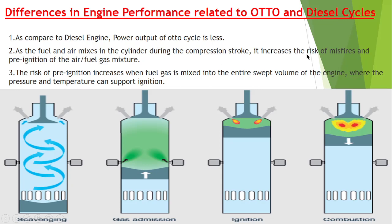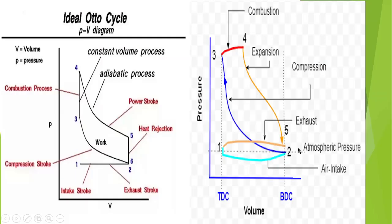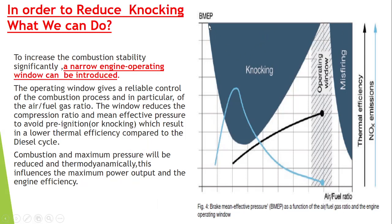As the fuel and air mix in the cylinder during the compression stroke, it increases the risk of misfire and pre-ignition of the air-fuel gas mixture. The risk of pre-ignition increases when fuel is mixed in the entire swept volume where pressure and temperature can support ignition. The biggest problem of the gas admission engine is knocking. This diagram shows the knocking area and the misfire area.